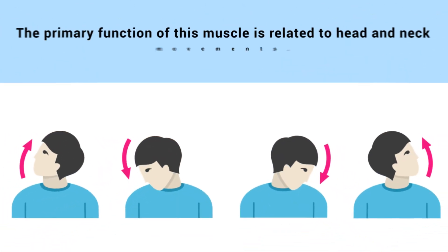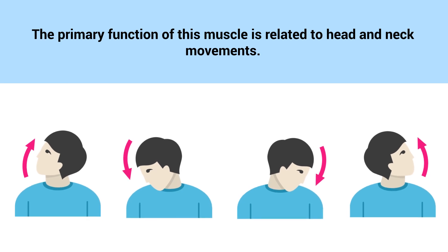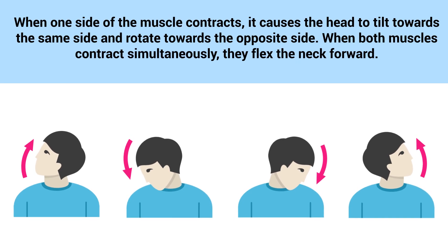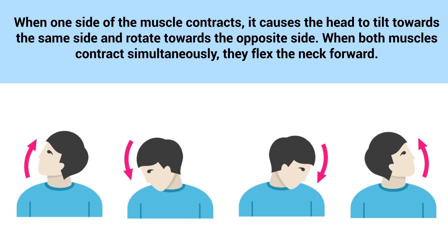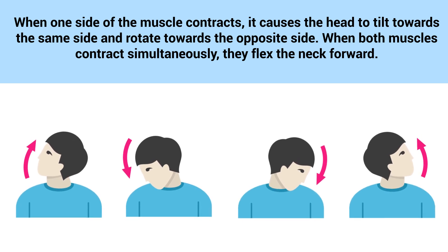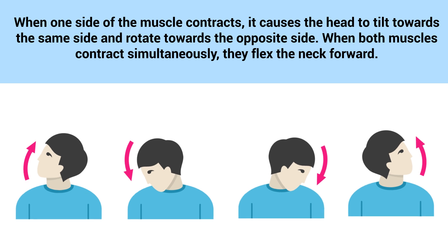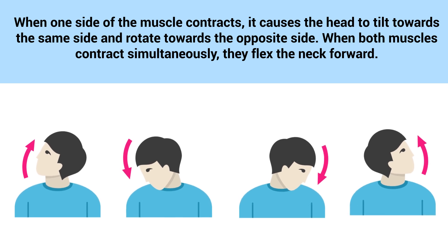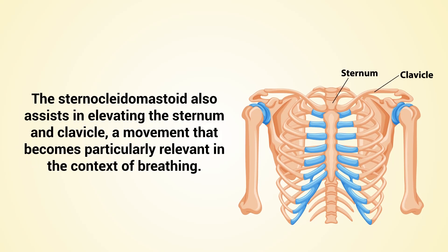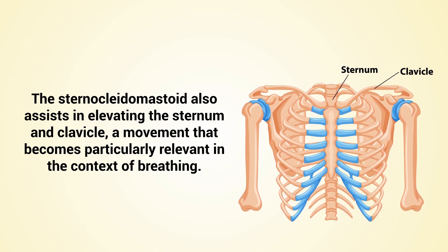The primary function of this muscle is related to head and neck movements. When one side of the muscle contracts, it causes the head to tilt towards the same side and rotate towards the opposite side. When both muscles contract simultaneously, they flex the neck forward. The sternocleidomastoid also assists in elevating the sternum and clavicle, a movement that becomes particularly relevant in the context of breathing.